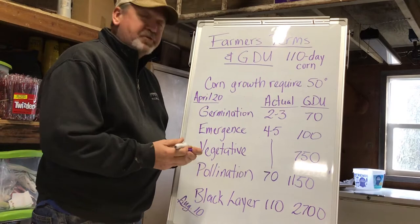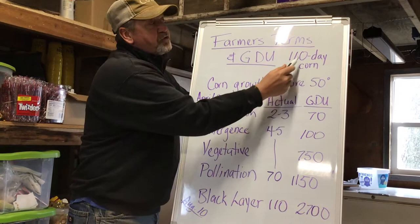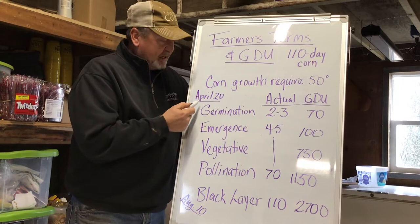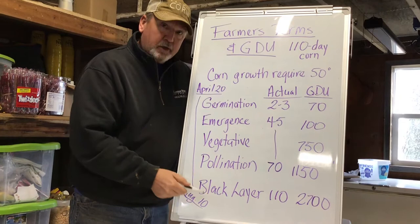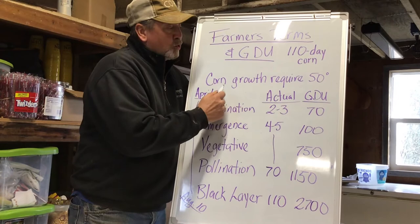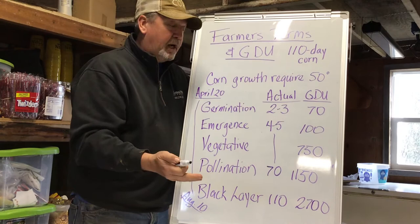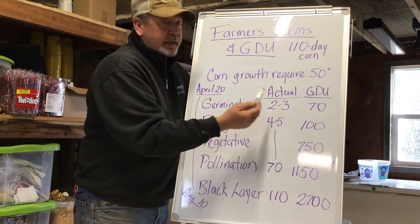Let's link these terms together — farmer's terms and growing degree units — using 110-day corn as an example. Let's say the farmer decides to plant on April 20th. In actual days, 110 days puts us at black layer or physiological maturity at August 10th. Remember that corn growth requires 50 degrees — that's why your base was 50 in the math problem.